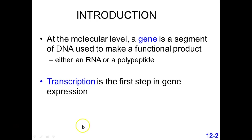The most common product we think of is a polypeptide — another name for a polypeptide is a protein. Most of the time we make proteins from that information. There's a stepwise process in which this happens. The first step is transcription. RNA is actually considered a gene product as well, and it's made from the DNA.